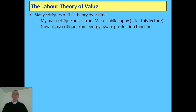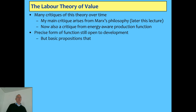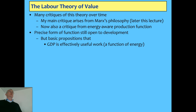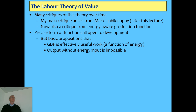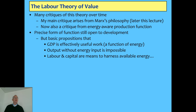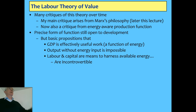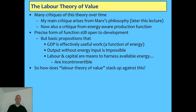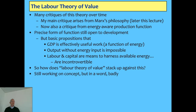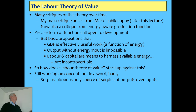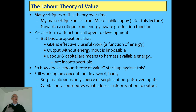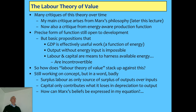Now I want to take a look at this from the point of view of the energy production function I developed last week. The basic idea is that GDP is effectively useful work, which is a function of energy — taking available energy and turning it into something useful. Output without energy is impossible; you simply can't produce output unless you are harnessing energy. Labor and capital are both means to harness that energy. That comes back to Coddington's arguments: if your theory is inconsistent with the thermodynamics, it should be discarded. That's fundamentally what I'm saying the labor theory of value should do. So what it's arguing is that surplus labor — labor above and beyond the cost of reproduction of the worker — is the only source of surplus of outputs over inputs, and capital only contributes what it loses in depreciation.